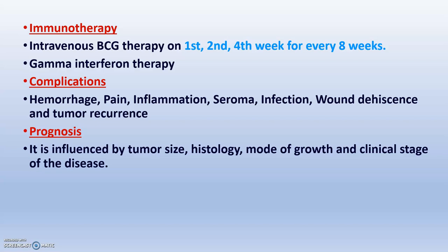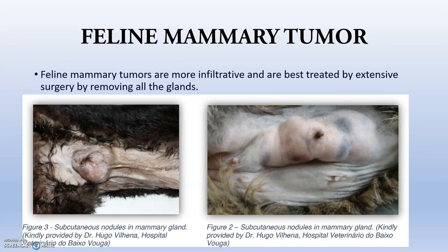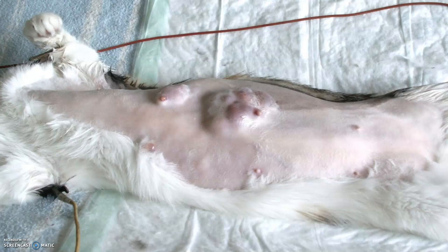Prognosis depends completely upon tumor size, histology, mode of growth, clinical stage, and age. Regarding feline mammary tumors: they are more complicated because they are more infiltrative and are best treated by extensive surgery removing all glands. Thank you.